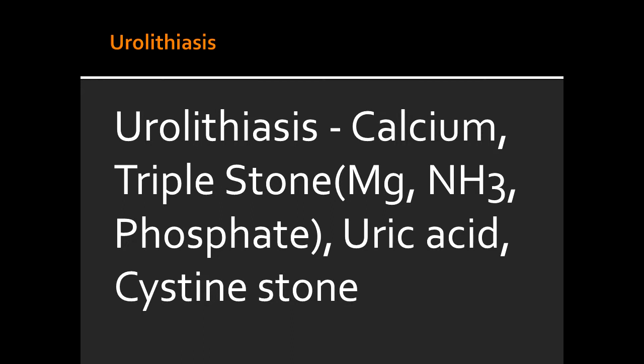Name the four different types of kidney stones. The four different types of kidney stones include calcium stones, magnesium ammonium phosphate stones known as the triple stones, uric acid stones, and cysteine stones.